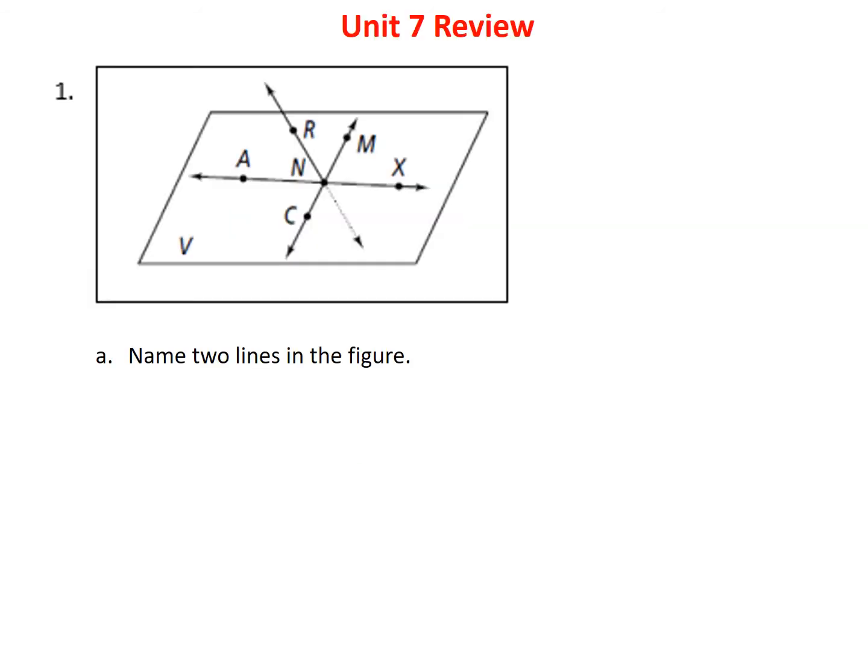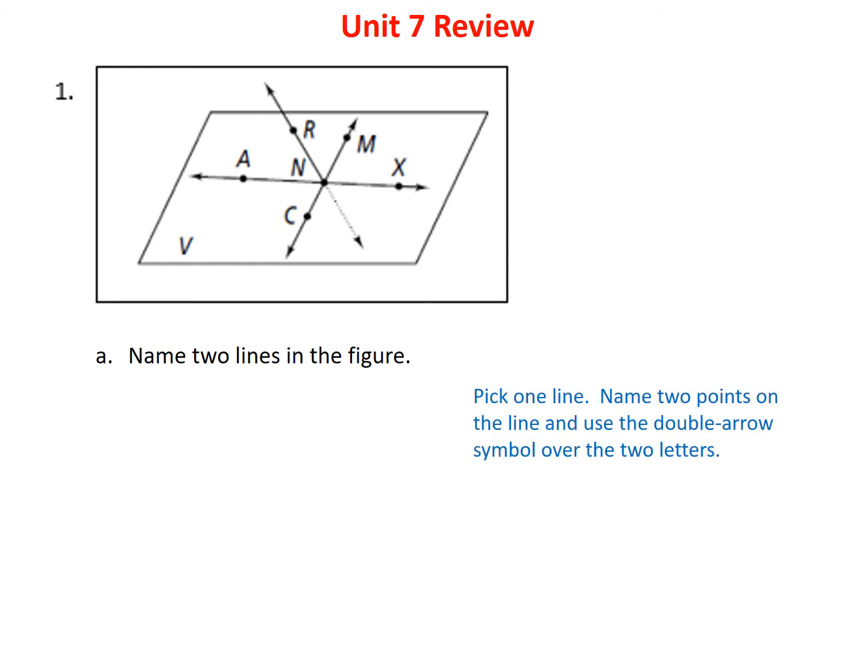Problem number one gives us the following diagram. You see three lines intersecting at point N, and it asks us: can we name two lines in the figure? First, let's just pick one line, then name two points on that line and use the double arrow symbol over the letters. Here's a line going from A, N, and X. Notice I can name this with any two letters.